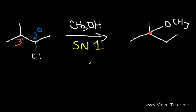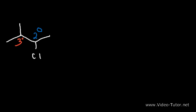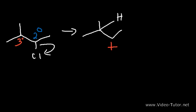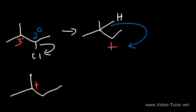Let's begin with the mechanism. The first step is that the leaving group leaves and we form a secondary carbocation. Whenever you have a carbocation, you need to watch out for rearrangements. Because there's a tertiary carbon next to the secondary carbocation, a hydride shift will occur. The hydride will glide towards the carbocation and the two will trade places. Now the plus charge is on the tertiary carbon and the hydrogen is on the secondary carbon. Tertiary carbocations are more stable than secondary carbocations, so the driving force for that rearrangement is carbocation stability.